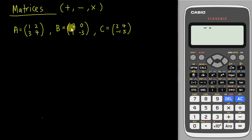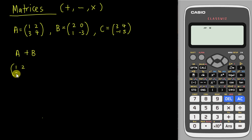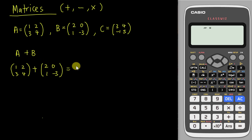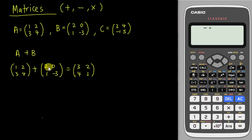Let's say you have three different matrices A, B, and C. If you want to add them, you can do it manually. So if you want to do matrix A plus matrix B — for example, 1, 2, 3, 4 plus 2, 0, 1, negative 3 — each position can only be added with its corresponding position. So 1+2=3, 2+0=2, 3+1=4, and 4+(−3)=1.